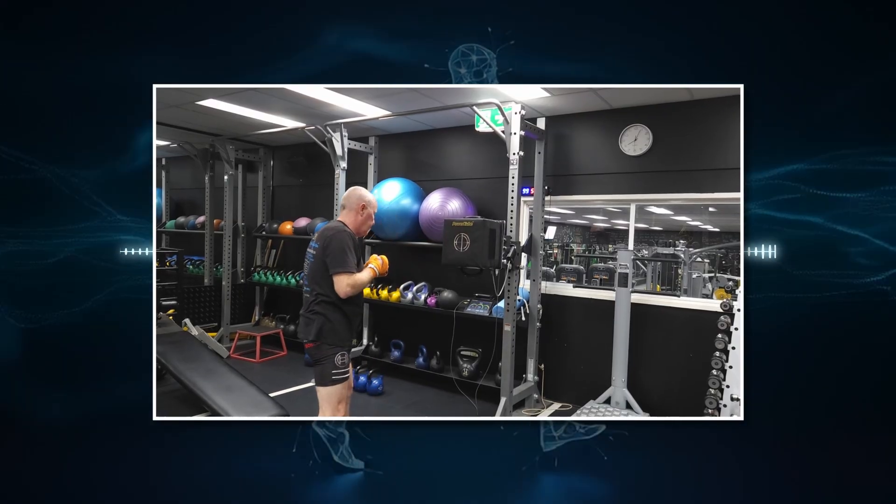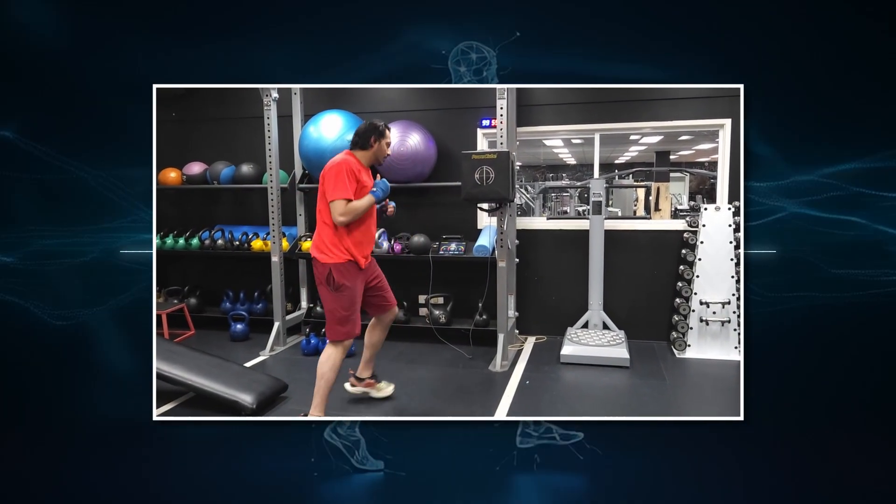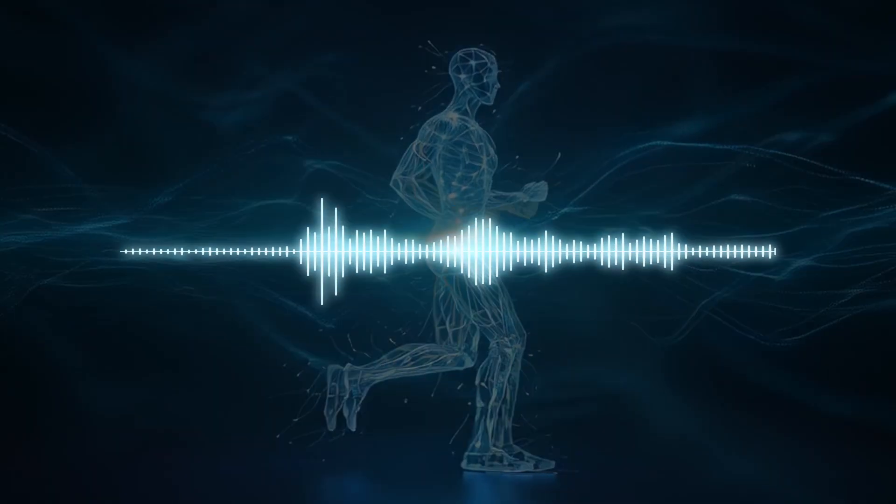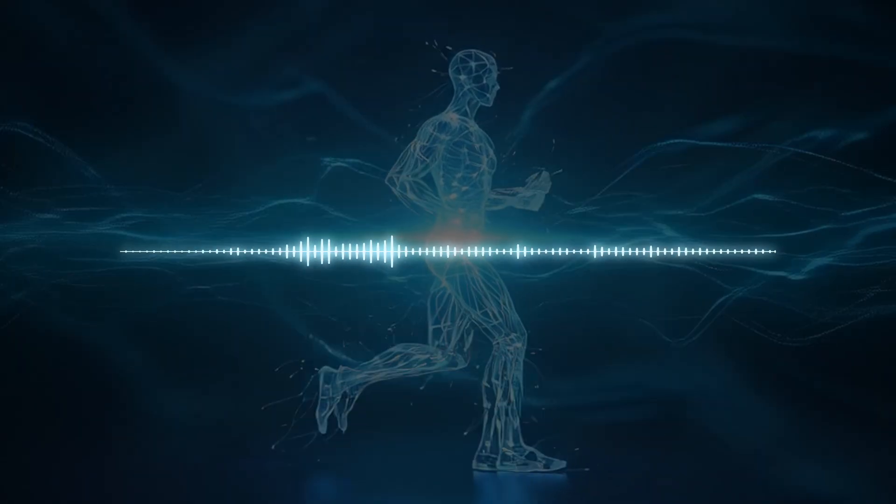Every boxer threw both straight punches and hook punches, while the PowerCube captured the exact moment of impact. Then came the brilliant part. Correlation analysis and linear regression to determine which physical traits actually predict punch power.